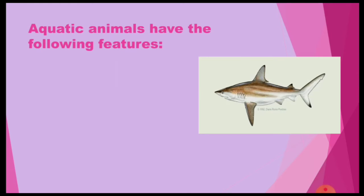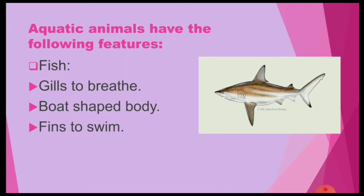Aquatic animals have the following features. Fishes have gills to breathe, a boat-shaped body to move easily in water, and fins to swim.